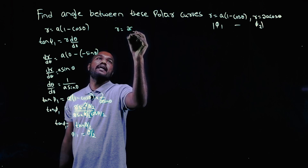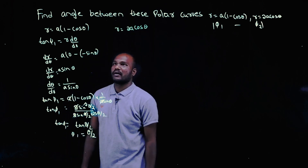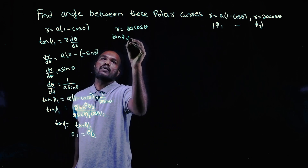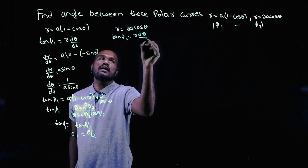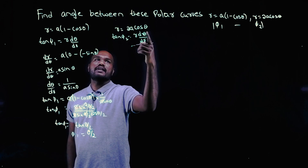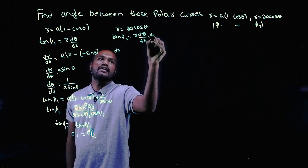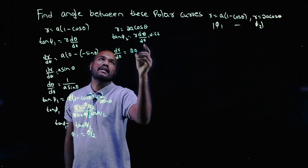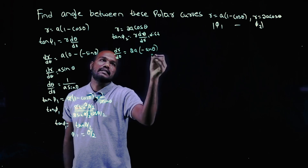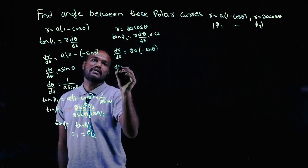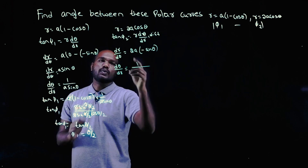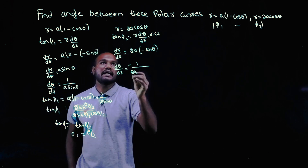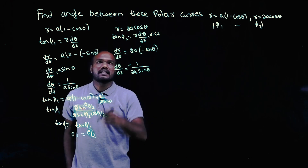Now let's go to the second curve: r = 2a cosθ. Again, tan φ₂ = r · dθ/dr. Differentiating: dr/dθ = 2a · (-sinθ) = -2a sinθ. Flipping to get dθ/dr: dθ/dr = -1/(2a sinθ).